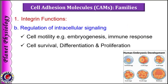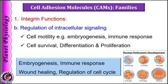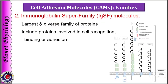The next important function of integrins is to regulate various intracellular signaling cascades which mediate cell motility, survival, proliferation and differentiation. Thus integrins play an important role in migration of cells during embryogenesis, immune response, wound healing, and mainly regulate the G1 phase of the cell cycle.